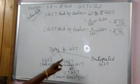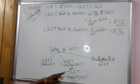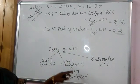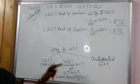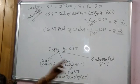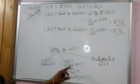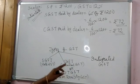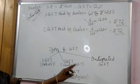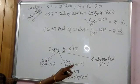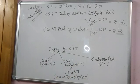If the sales are within a union territory, we say it as UTGST instead of SGST.